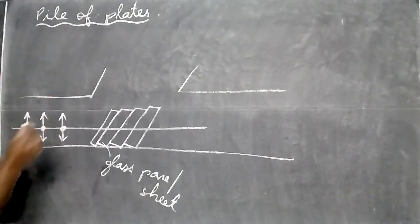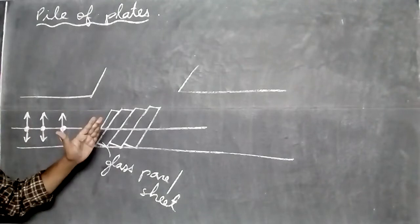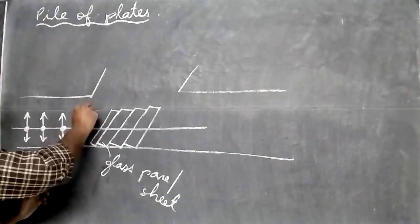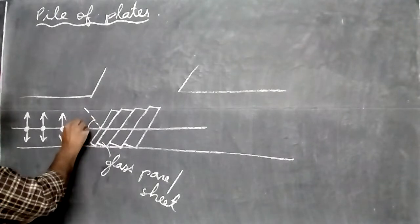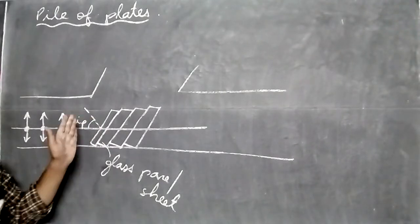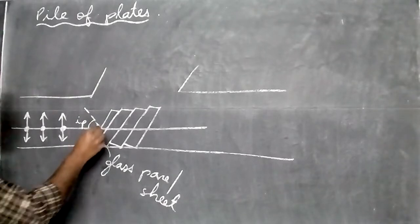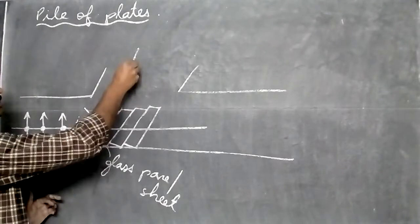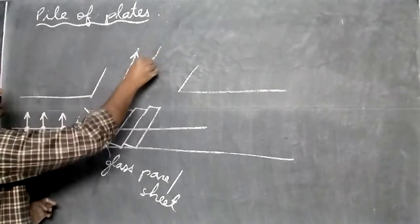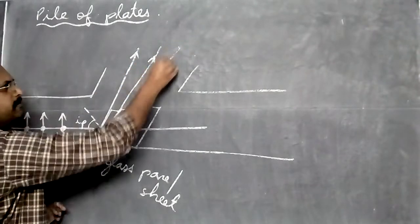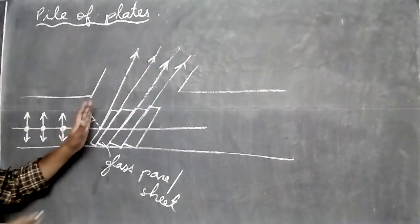When light goes here, we make it in such a way that this angle is the polarizing angle IP. So light hits at angle IP and will be reflected. This light ray will go upwards here. At this point there is reflection, and light goes upward at each glass pane.